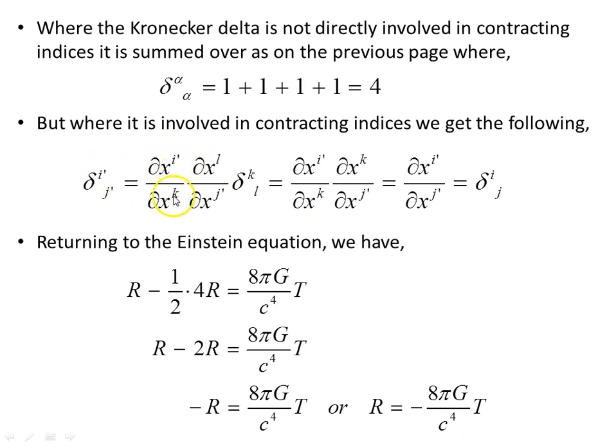When we do that, ∂x'^i/∂x^k times ∂x^l/∂x'^j, one up, one down, times δ^k_l. Now, when we contract the Kronecker delta here, when we contract k and l, l equals k here. You'll see over here, next, this l becomes a k, and so we have k here, k here, they will cancel out to give us this object, which is equal to the Kronecker delta by definition.